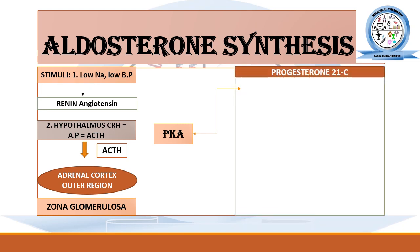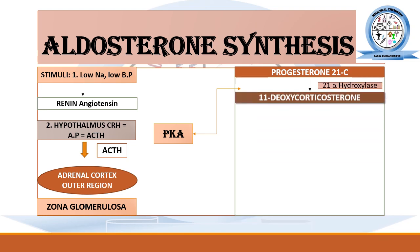In the aldosterone pathway, progesterone — the 21-carbon molecule — is first converted into 11-deoxycorticosterone by the action of 21-alpha-hydroxylase enzyme. What generally happens in the biosynthesis of aldosterone is a series of hydroxylation processes with corresponding structural changes.